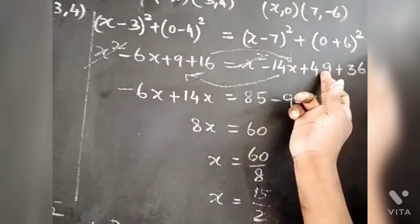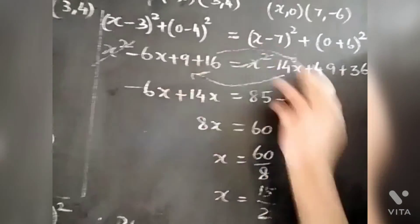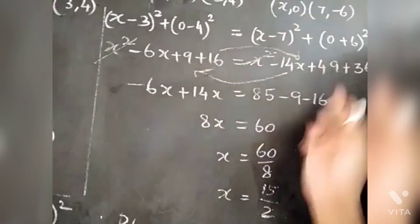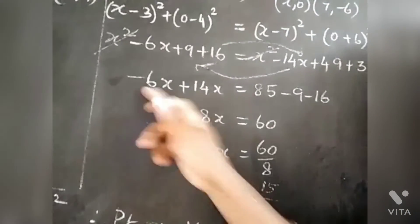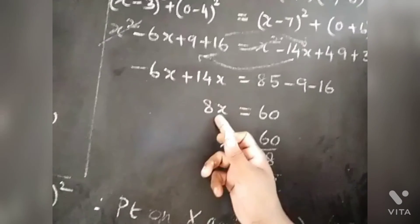Cancel, we get 49 + 36 = 85. 9 becomes -9, 16 becomes -16. When sign differs, put the big number sign and subtract. It becomes 8x.